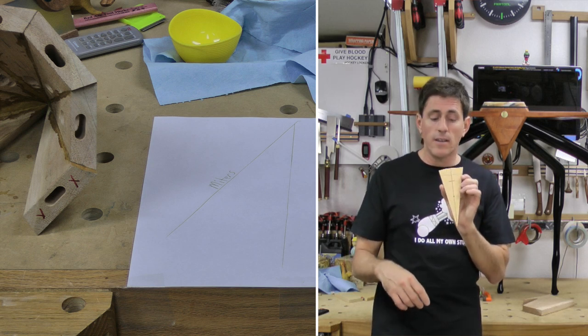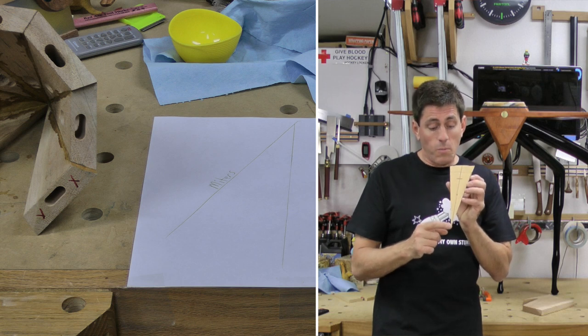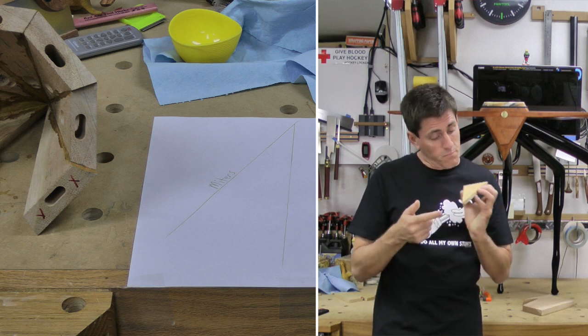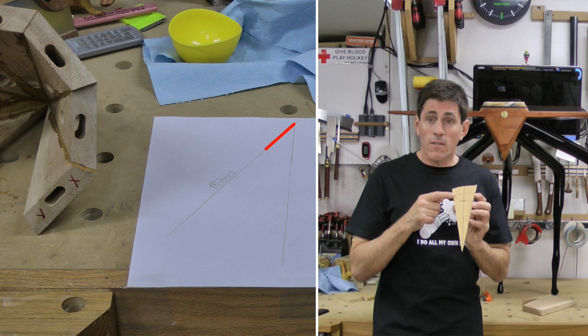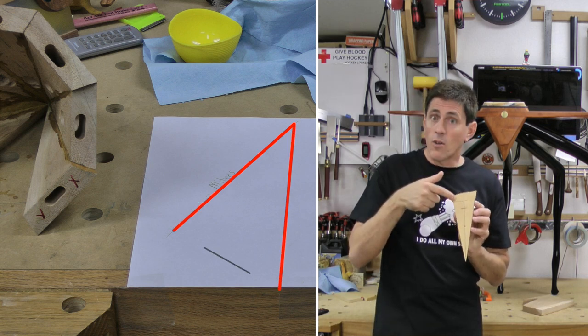So the way that you would do that is you would measure up a distance from this point, let's call that seven inches up to here, and then I measured seven inches from there up to this side and then connected the two dots.